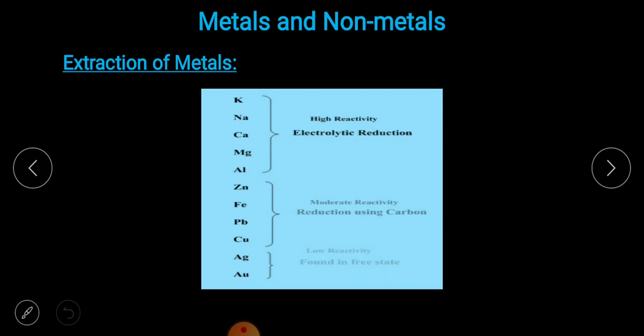For extraction of metals: sodium, potassium, calcium, magnesium, and aluminum require electrolytic reduction. Zinc, iron, lead, and copper use reduction using carbon. Silver and gold are found in free state, so we don't need to extract these two elements.